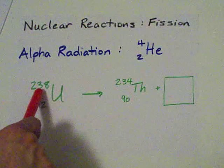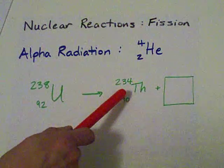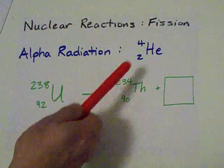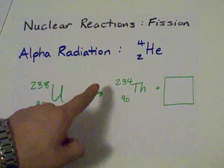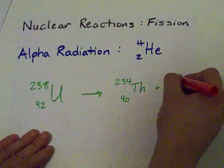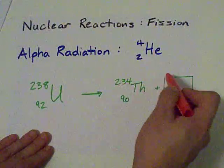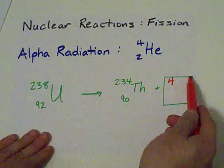Check it out. When uranium-238 breaks apart to give thorium-234, what are we missing? Well, the masses have to add up to the same thing on both sides. So that means we're missing a mass of 4 here. 234 plus what gives us 238? The answer's 4.